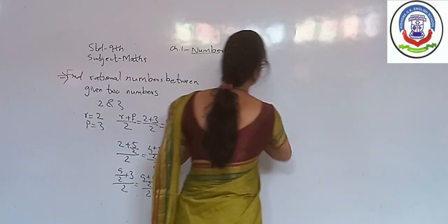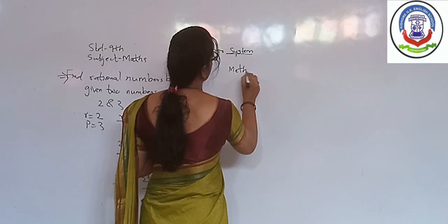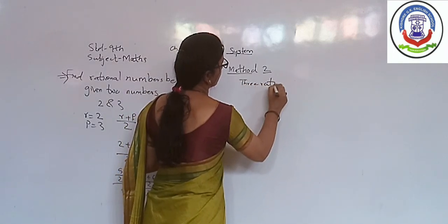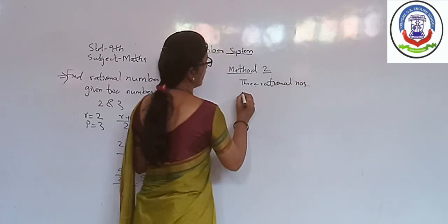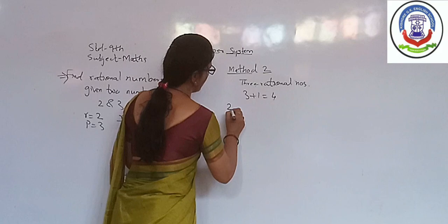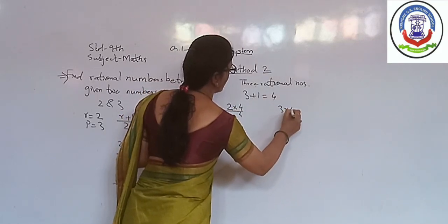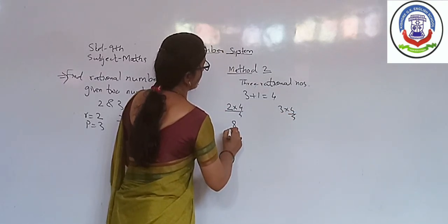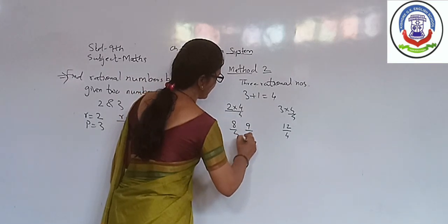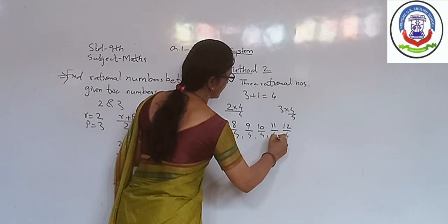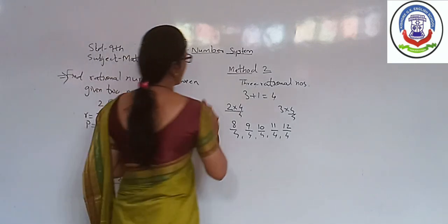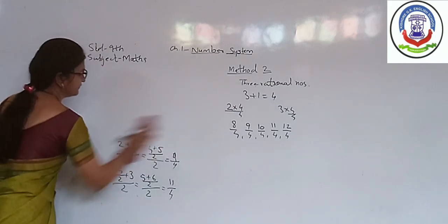Another method: If you want to find out 3 rational numbers, then 3 plus 1 is 4. Multiply and divide both numbers by 4 by 4. That is 2 into 4 upon 4 and 3 into 4 upon 4. It is 8 by 4 and 12 by 4. Now write down the rational numbers in between them: 9 by 4, 10 by 4, and 11 by 4. This method is easy as compared to the previous method.